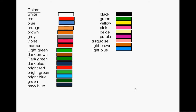Welcome to lesson 18: English language vocabulary — colors. White, red, blue, orange, brown, gray, violet, maroon, light green, dark brown.